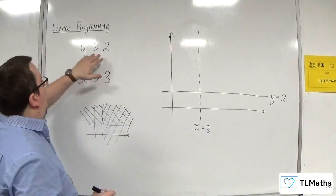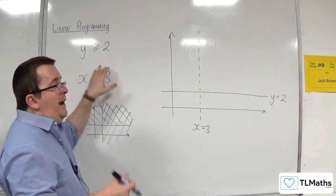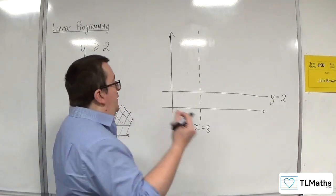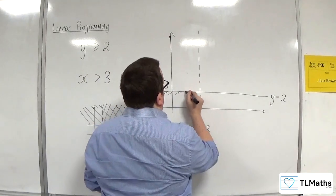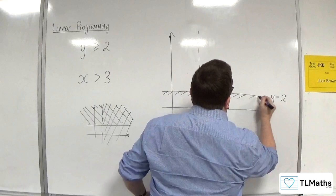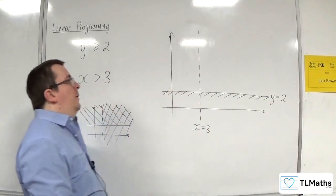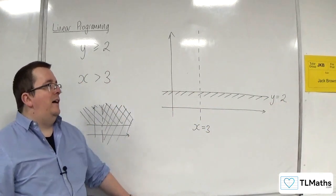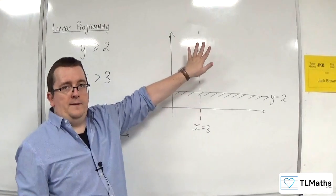So, because y is greater than or equal to 2, I shade the region I don't want, and this is the type of shading that I would use. That's all it is. So I use some dashes like that, and that identifies that I want above the line.